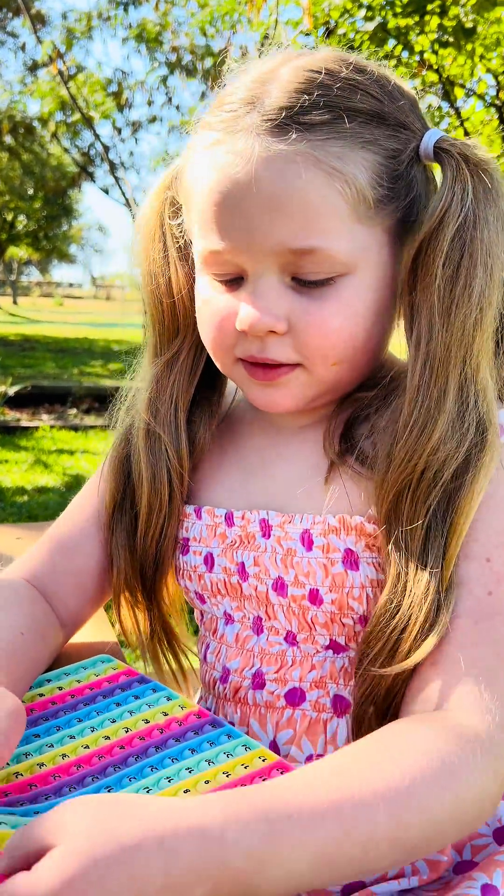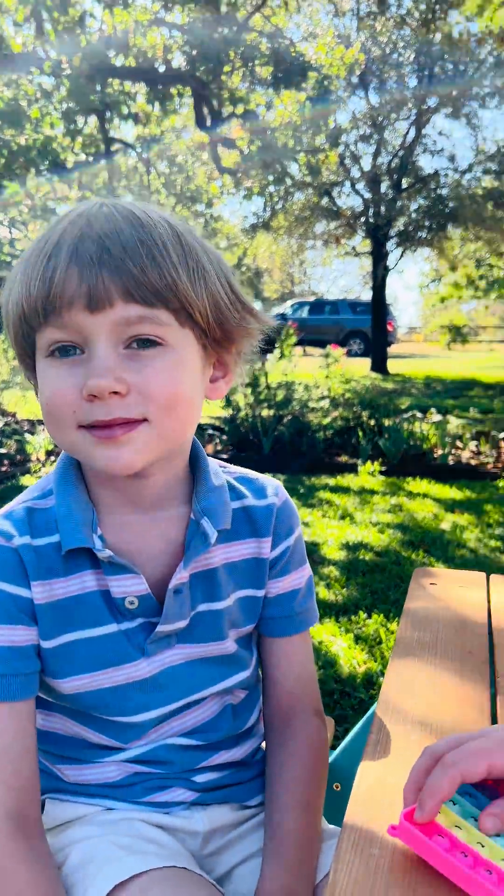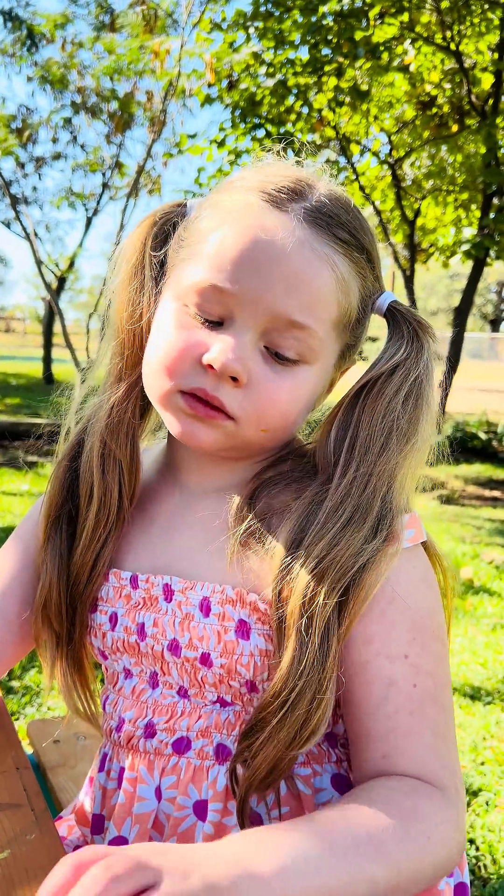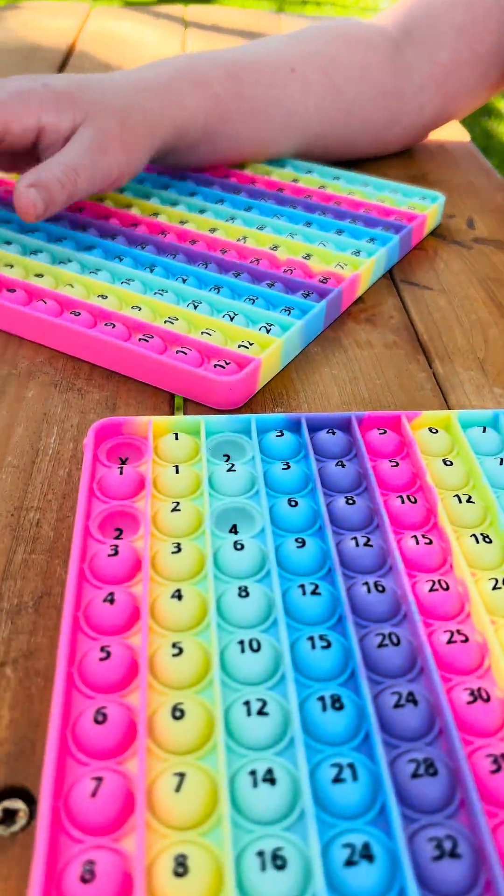So, now I'm going to show you a magical process called a square root, which is the opposite. If I give you the number 4, and I ask you, which number did you have to multiply by itself to get 4, can you find it on the table here?